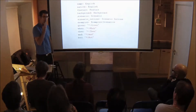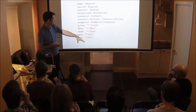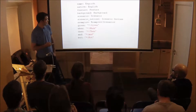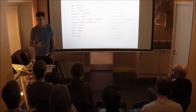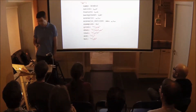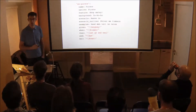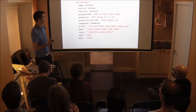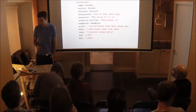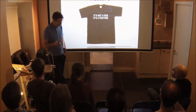Gherkin is actually a really small language — just a couple of verbs, a couple of words, and a couple of keywords. That's good news because it means it can be translated. It's actually translated into 37 different spoken languages, some of which are a bit confusing. The specifications are written in a feature file.